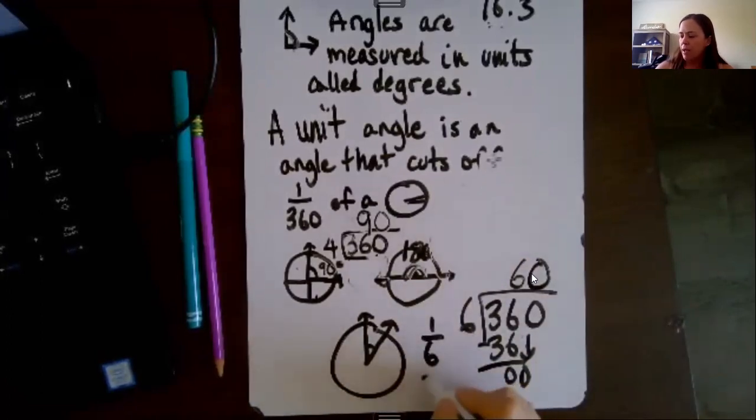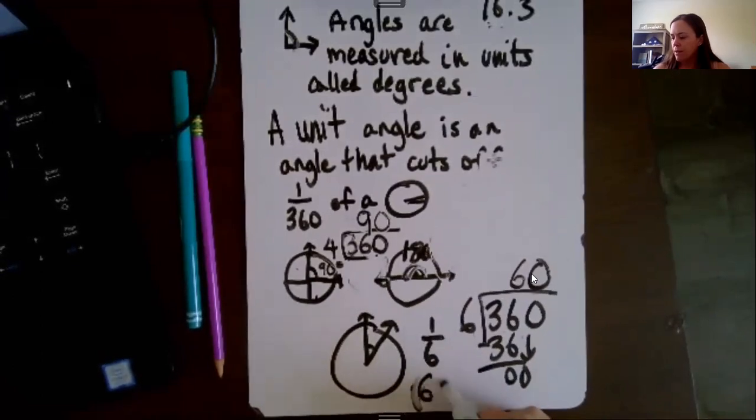So this angle, or the degree, sorry, is 60 degrees. And that's the degree sign again right there, the little circle.